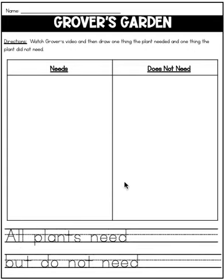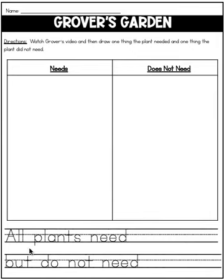Hit pause now. Draw your picture of something the plant needed and something the plant did not need from the Grover video. When you're done drawing, hit play. Okay, if you're listening now, you should have your pictures all drawn nicely above.